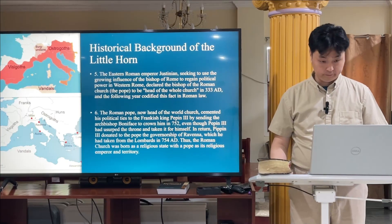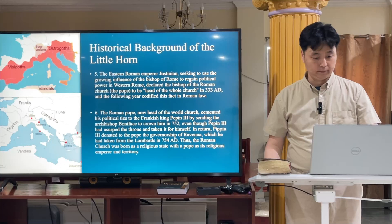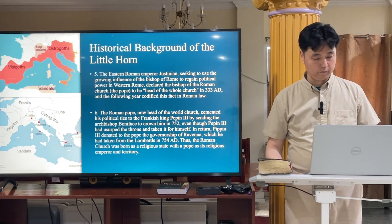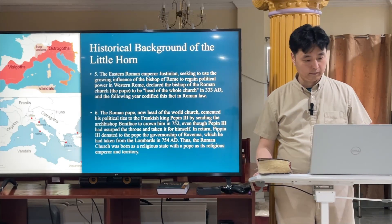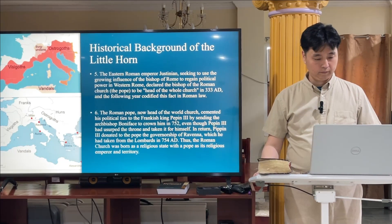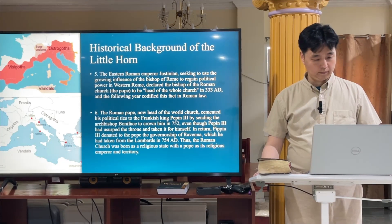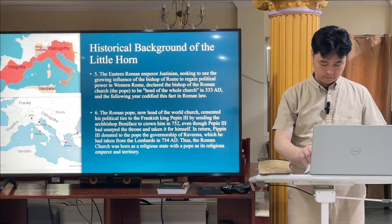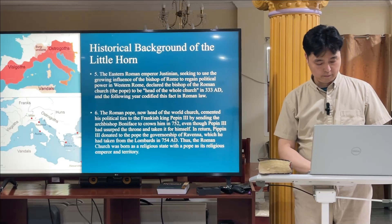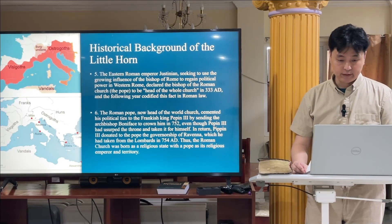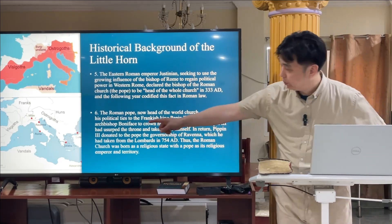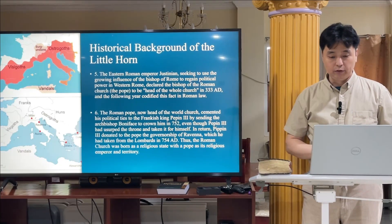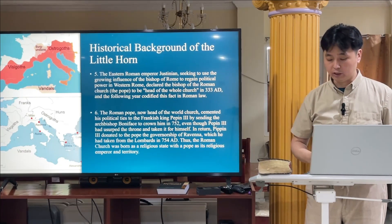The Roman pope, now head of the world church, cemented his political ties to the Frankish king Pepin the Third by sending Archbishop Boniface to crown him in 752, even though Pepin had usurped the throne. In return, Pepin the Third donated to the pope the governorship of Ravenna, which he had taken from the Lombards in AD 754. Thus the Roman church was born as a religious state with the pope as its religious emperor — the political power was given to the pope as well.